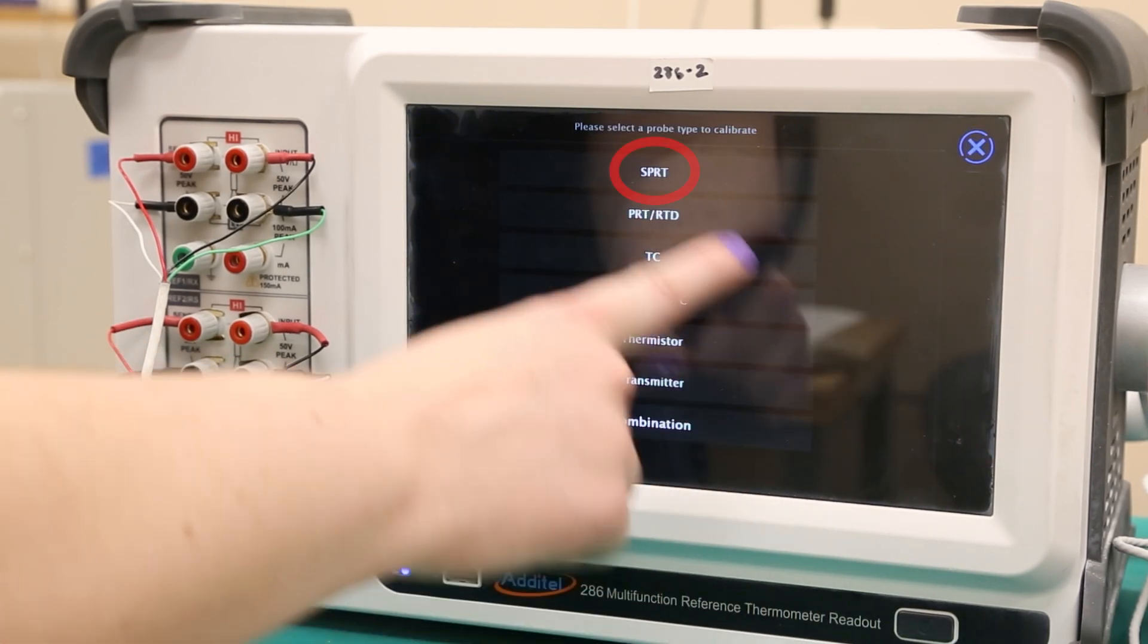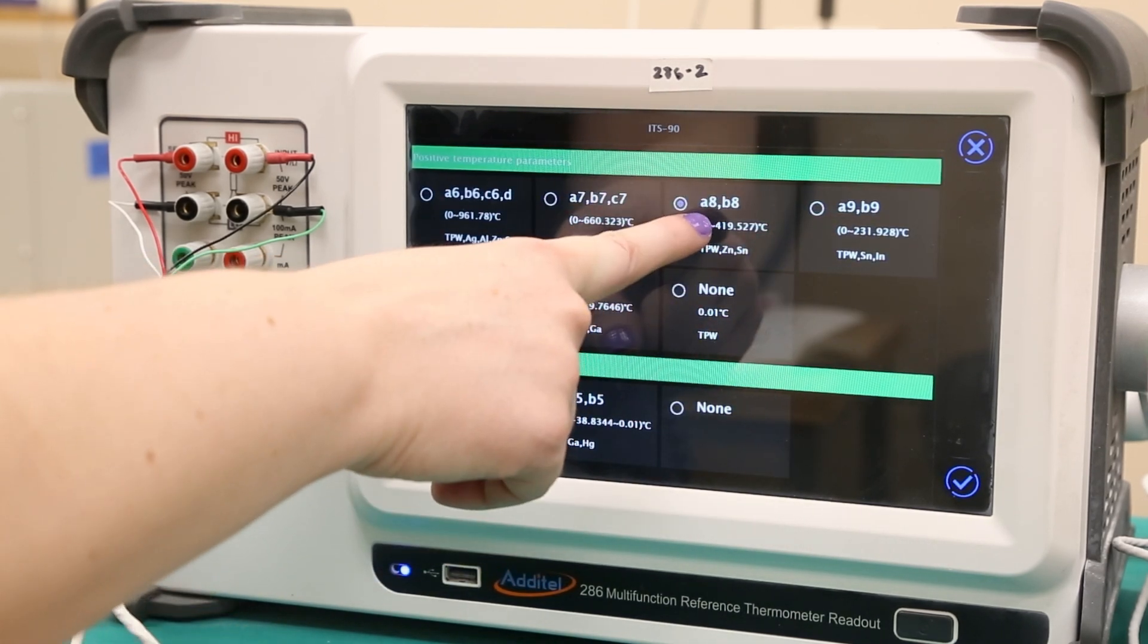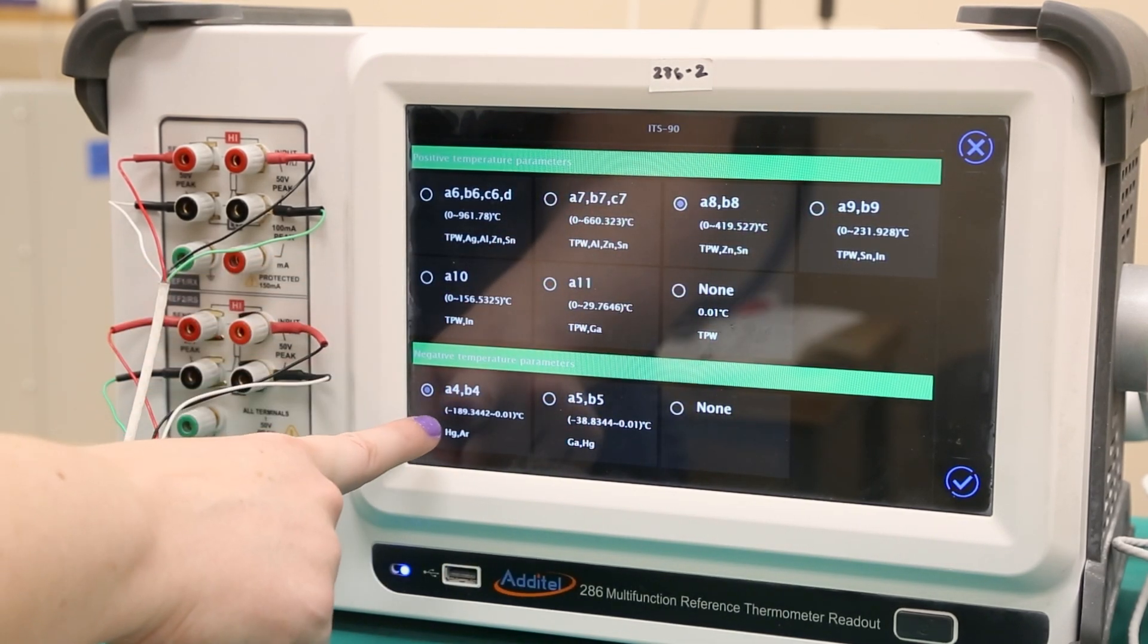Select the probe type, in this case SPRT. Here we can choose the ITS-90 sub-ranges we will be calibrating, which are eight and four as mentioned previously.